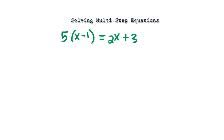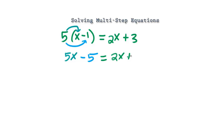So we have a set of parentheses here, so I want to distribute that 5. 5 times x will give you 5x, and the 5 times negative 1 will give you negative 5. And it's just 2x plus 3 on the right-hand side.